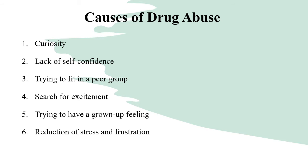Number five: trying to have a grown-up feeling. Some teenagers or youth take drugs because it gives them a feeling of being grown up. Number six: reduction of stress and frustration. Some people start taking drugs when they are under stress or feel frustrated. Stress and frustration may arise from broken marriages, a failed business, deaths of loved ones, a quarrel between a teenager and his parents, maltreatment by a stepmother, breakdown in health, and other causes.